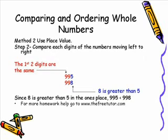Step two when using place value is to compare each digit of the numbers moving from left to right — this is key. You want to compare moving from left to right. As you can see in our example, the first two digits are the same. Both the hundreds place and the tens place in both numbers contain a nine, so they are exactly the same.